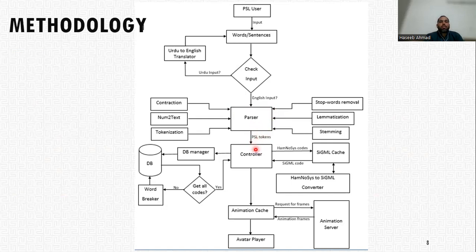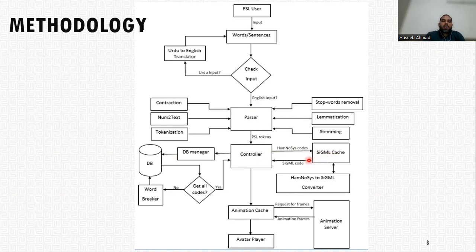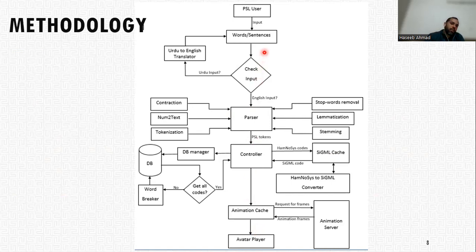These keywords are then passed to the controller, which is connected with the database manager. In that database, we look up HamNoSys notations against each word. That is provided to the scripting language XML called SiGML. SiGML cache provides SiGML code against each HamNoSys code, which is subsequently provided to the animation cache. The animation cache requests frames from the animation server, and in response, the animation frames are presented to the animation cache, finally converted into animations. The avatar player then plays that animation against the input keywords or sentences.